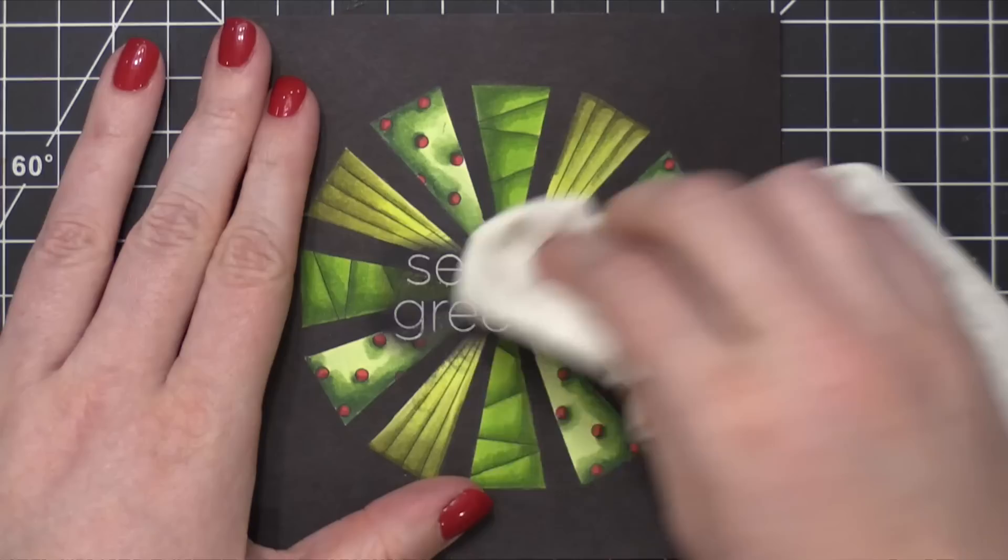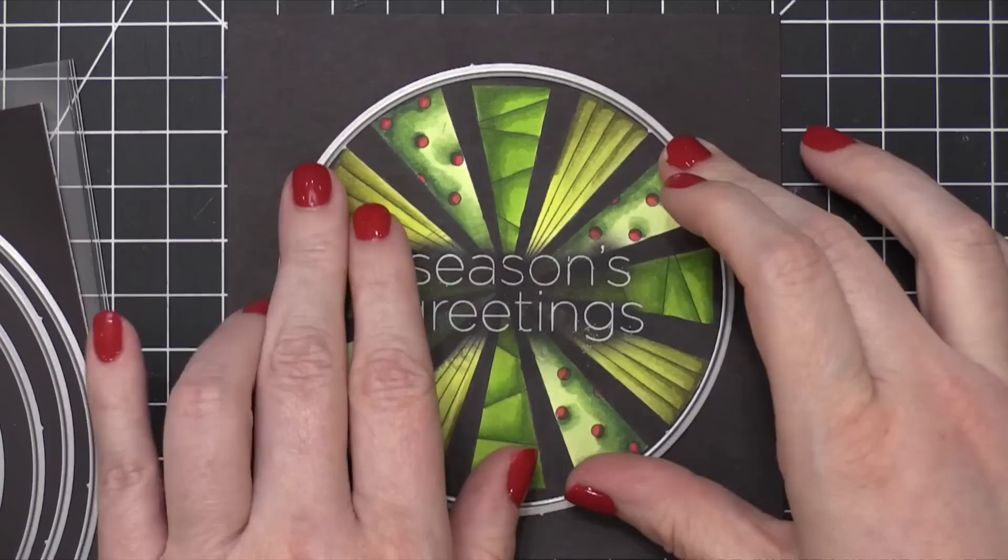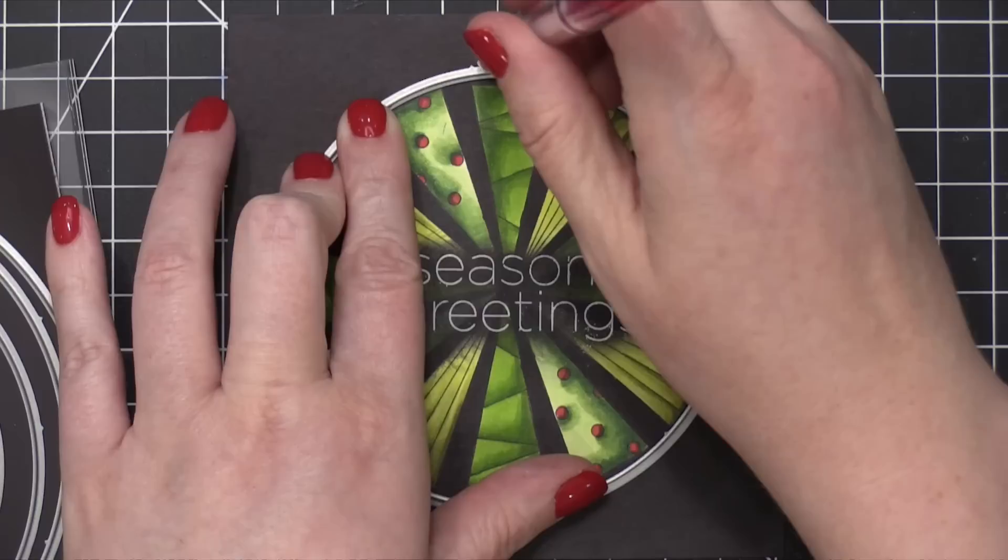When I was done with all of the blending of the black, I grabbed a paper towel and buffed the area, and that takes off any of the ink that may have been sitting on top of that embossed area. Then took the Nested Circles dies from Simon, and I just used the circle as a guide to pencil on a perfect circle.